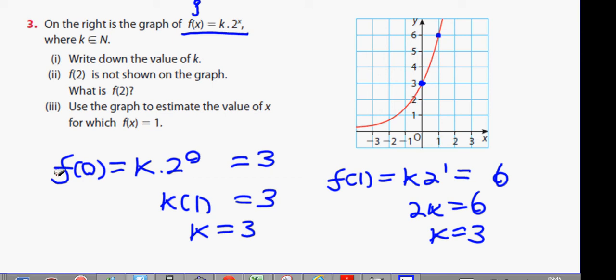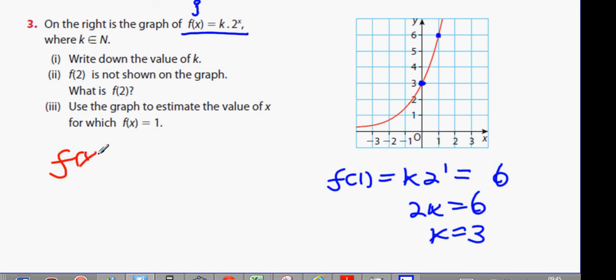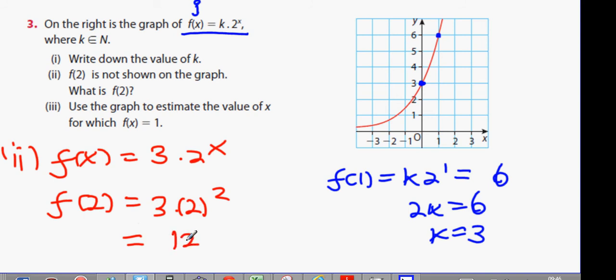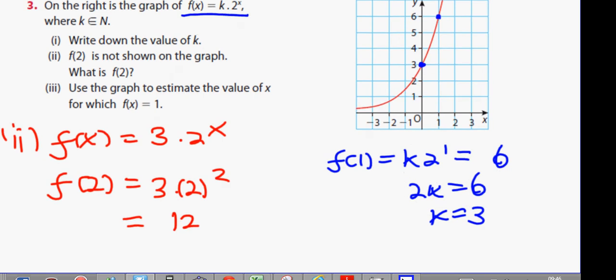Okay. f(2) is not shown on the graph. What is the value of f(2)? Well, we now know that f(x) is 3 times 2 to the power of x. f(2) means your input is 2. So it's going to be 3 times 2 to the power of 2. What's 3 times 2 to the power of 2? 12. Is that right? 12.